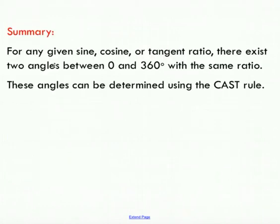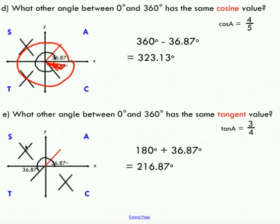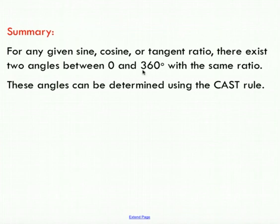Just a little summary: for any given sine, cos, or tan ratio, there exist two angles between 0 and 360 with the same ratio. You can't get more than two, because there's no way to have a positive or negative angle in quadrants where they don't exist. We can determine where those angles exist using the CAST rule.